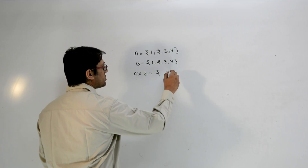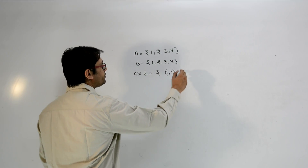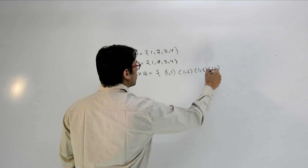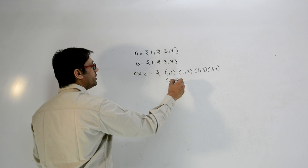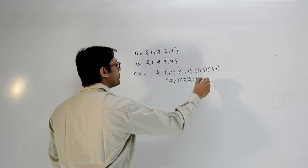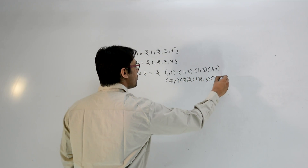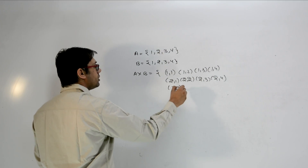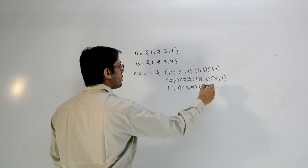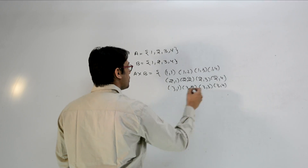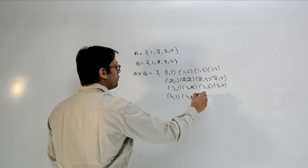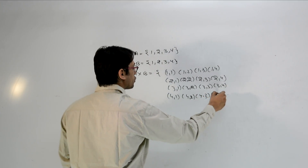The elements of A cross B are: (1,1), (1,2), (1,3), (1,4), (2,1), (2,2), (2,3), (2,4), (3,1), (3,2), (3,3), (3,4), (4,1), (4,2), (4,3), and (4,4).